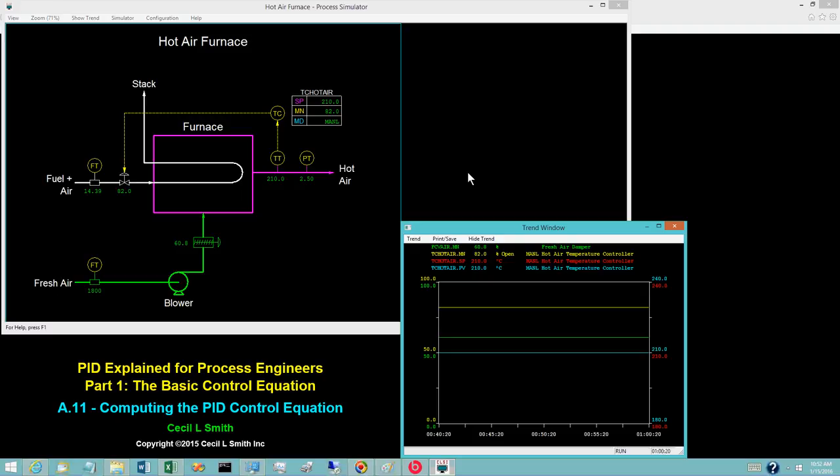No conventional pneumatic or electronic control system implemented the computations in this manner. We know this from disassembling the hardware. How do digital controls perform the computations? Manufacturers generally do not share such details, and few process types are into reverse compiling microcode.